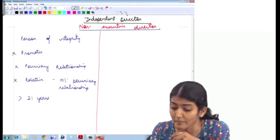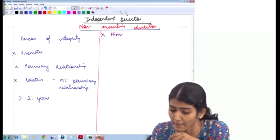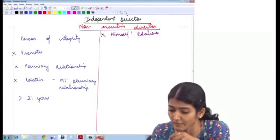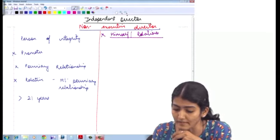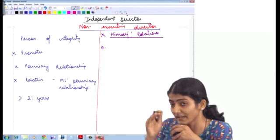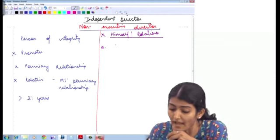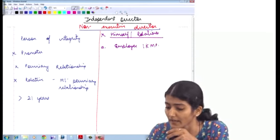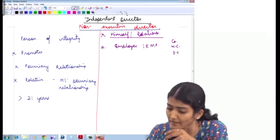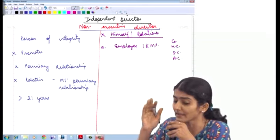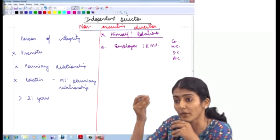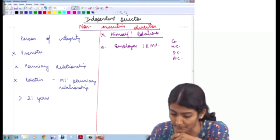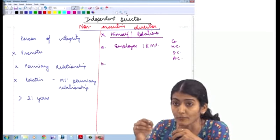Then after that, the next set of conditions apply — neither by himself nor through his relatives. Under this we have five points. The first: neither by himself nor through his relatives has he been an employee or a key managerial personnel of the four companies — the company, holding company, subsidiary company, and associate company.